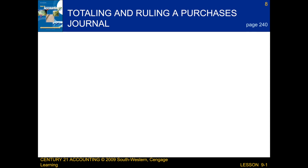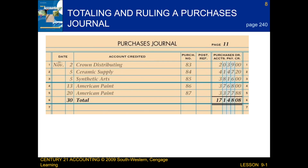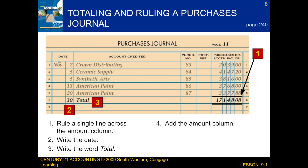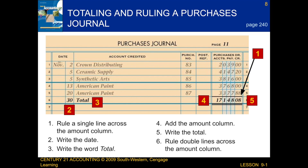The last thing we're going to be talking about in this lesson is totaling and ruling a purchases journal. When we total and rule a purchases journal, there are a few steps we follow. First, we rule a single line across the amount column. Next, we write the date. After that, we write the word 'total.' Then we add the amount column and write the total. Finally, we rule double lines across the amount column.